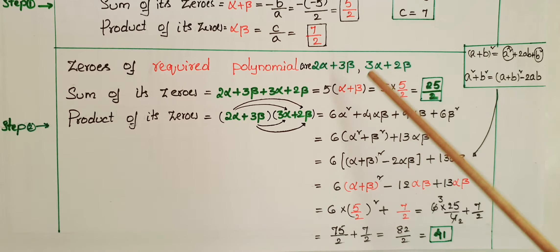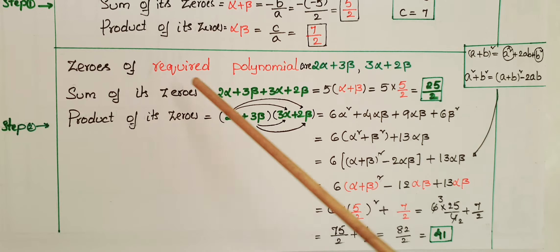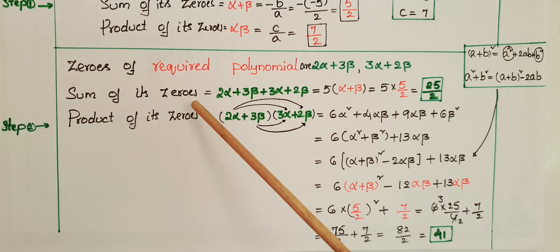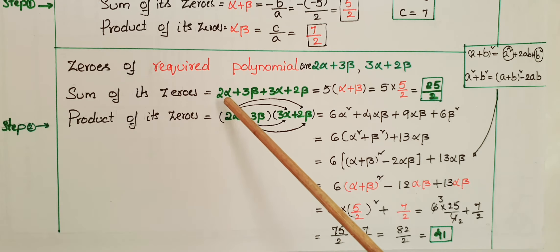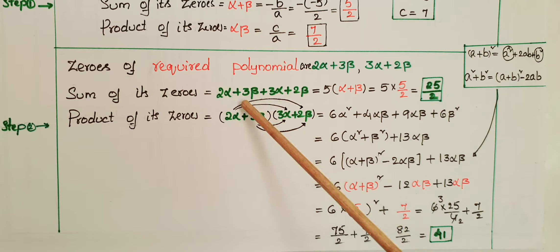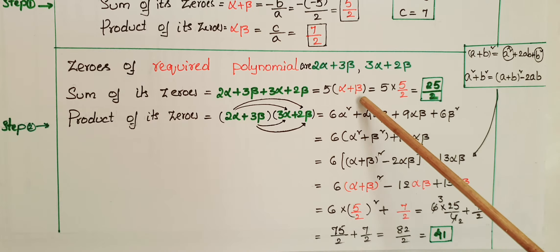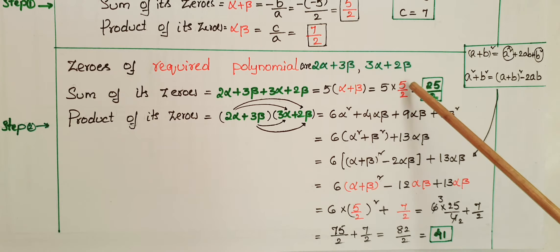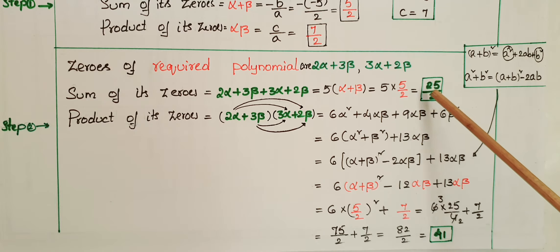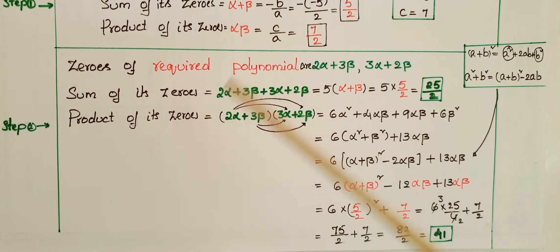Now we have to find another polynomial whose zeros are 2α+3β and 3α+2β. Sum of the required polynomial's zeros equals (2α+3β) + (3α+2β) = 5α+5β = 5(α+β). Since α+β = 5/2, this gives 5 × 5/2 = 25/2.